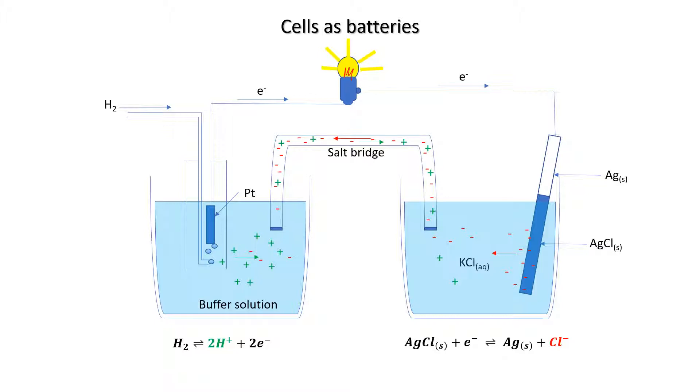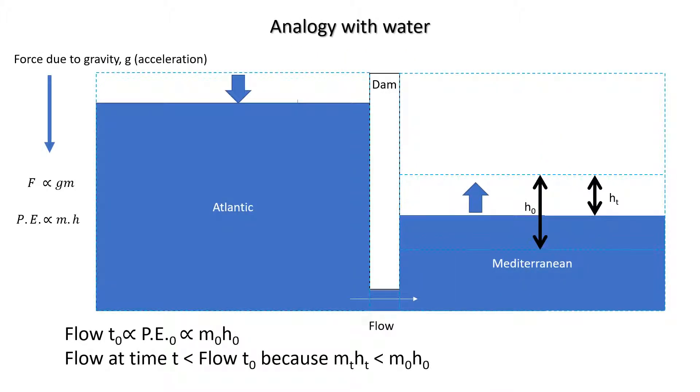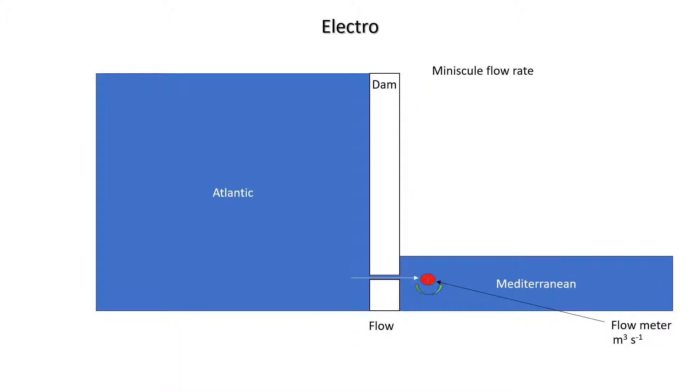So final bit of analogy, I promise. In order to only measure the flow and assess the potential, we drill a very small hole in the dam. We can still measure the flow, it's still proportional to the potential energy difference, but it would take years and years for the measurement to change the outcome of the measurement. Now I say all this because a lot of people get confused about how you can measure potential without changing the composition of the cell. The fact is you can't, but the rate at which you change it is so slow you will hardly notice it.